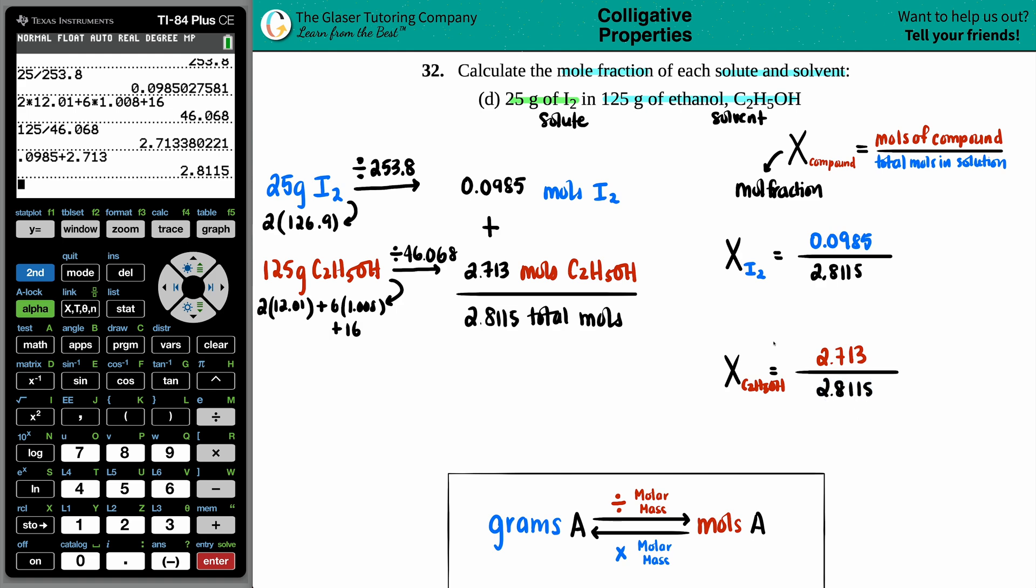Let's set up the answer here. So I get X for I2 and X for C2H5OH. These are going to equal something. Okay. That's good enough. So 0.0985 divided by 2.8115. Everything looks good. There we go.